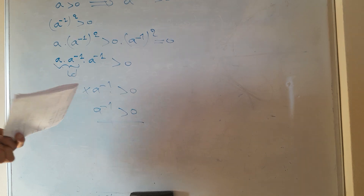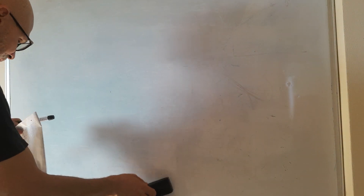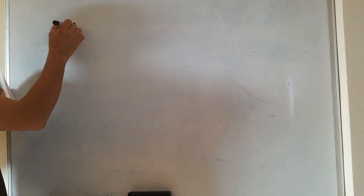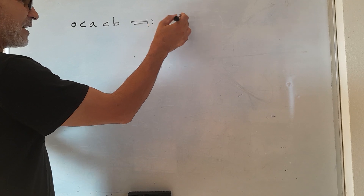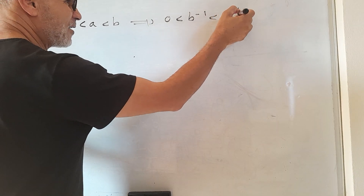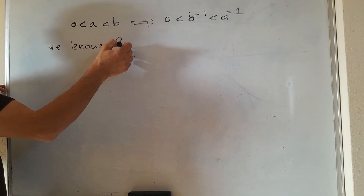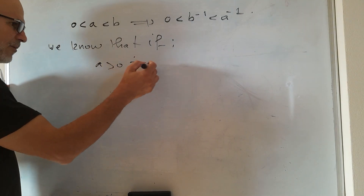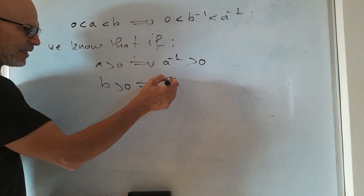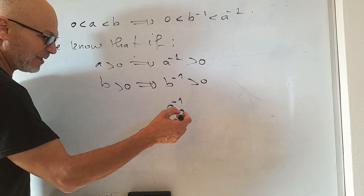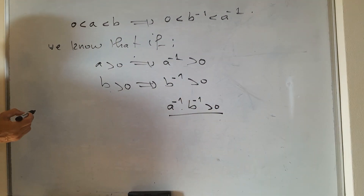The last question: if 0 < a < b, show that 0 < b⁻¹ < a⁻¹. We know that if a > 0 then a⁻¹ > 0, and if b > 0 then b⁻¹ > 0. Therefore a⁻¹ · b⁻¹ > 0.